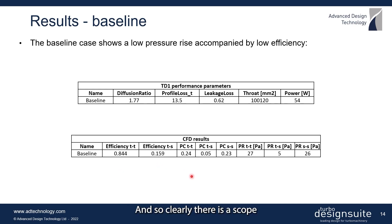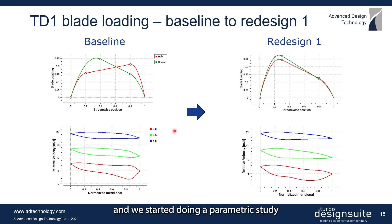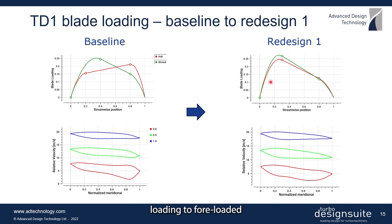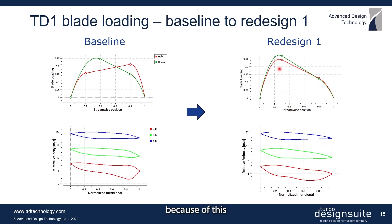Clearly there is scope for improvement in the performance. We looked at the blade loading on the baseline design, which was forward loaded at the hub and aft loaded at the shroud. We then started a parametric study, first keeping the forced vortex distribution for the spanwise RV-theta and changing only the blade loading. The first redesign changed the blade loading to forward loaded at both the hub and the shroud. The relative velocity plots from the inviscid flow analysis in TurboDesign One clearly show that hub loading is increased in the front portion and reduced in the aft portion.